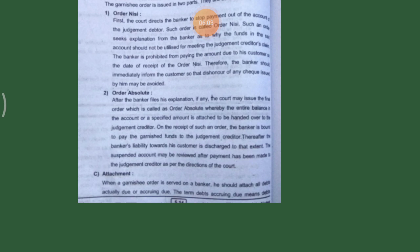A customer's current account is attachable by the Garnishee order. Also, a deposit account repayable on demand is attachable by the Garnishee order. There are different kinds of deposits that are attachable: deposits payable on fixed notice, provided the notice has been given by the customer before the order is received; and deposits payable on a fixed date in the case of a debt occurring due. The banker must stop all operations of the customer's account after receiving the Garnishee order, and it must remain dormant until the order is discharged.